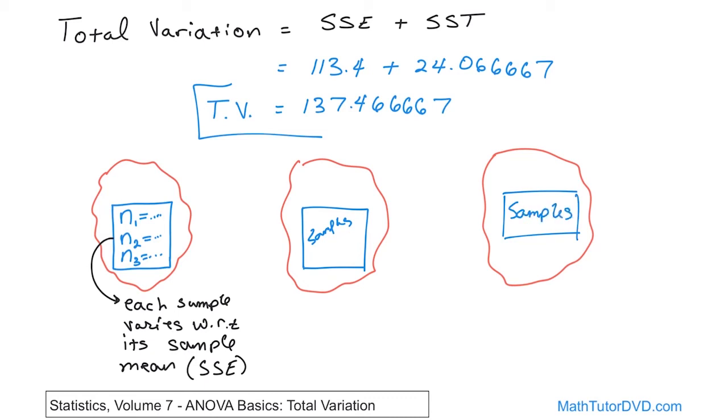And we don't have to have the same number of samples. In our example, we've done 10 samples everywhere, but we could do 6 samples, 10 samples, and 12 samples. That's okay. ANOVA works fine.